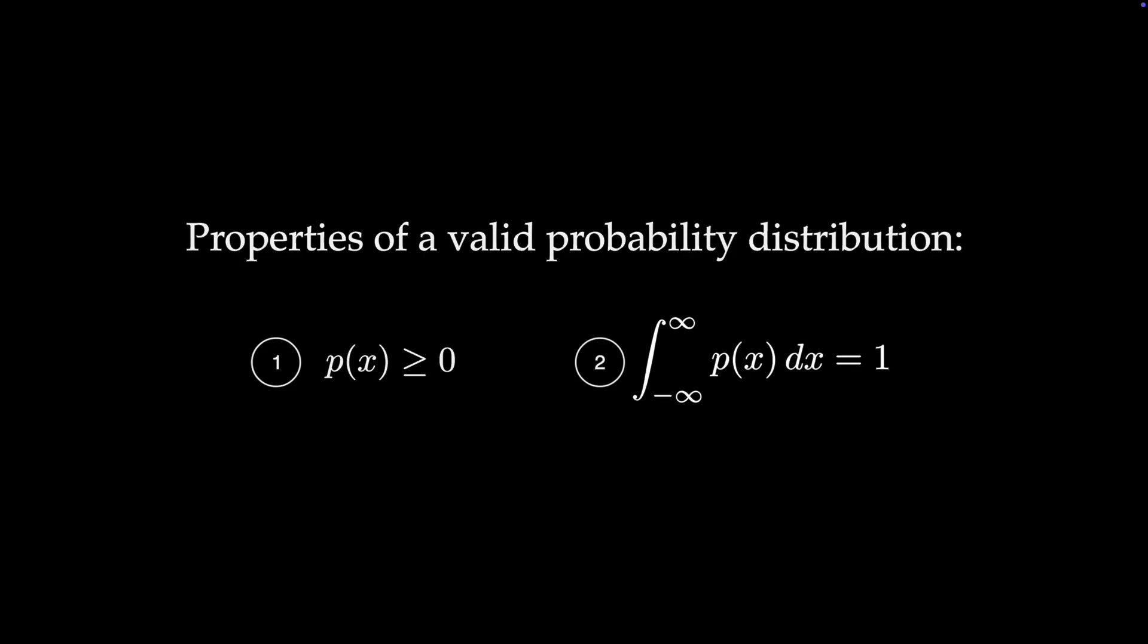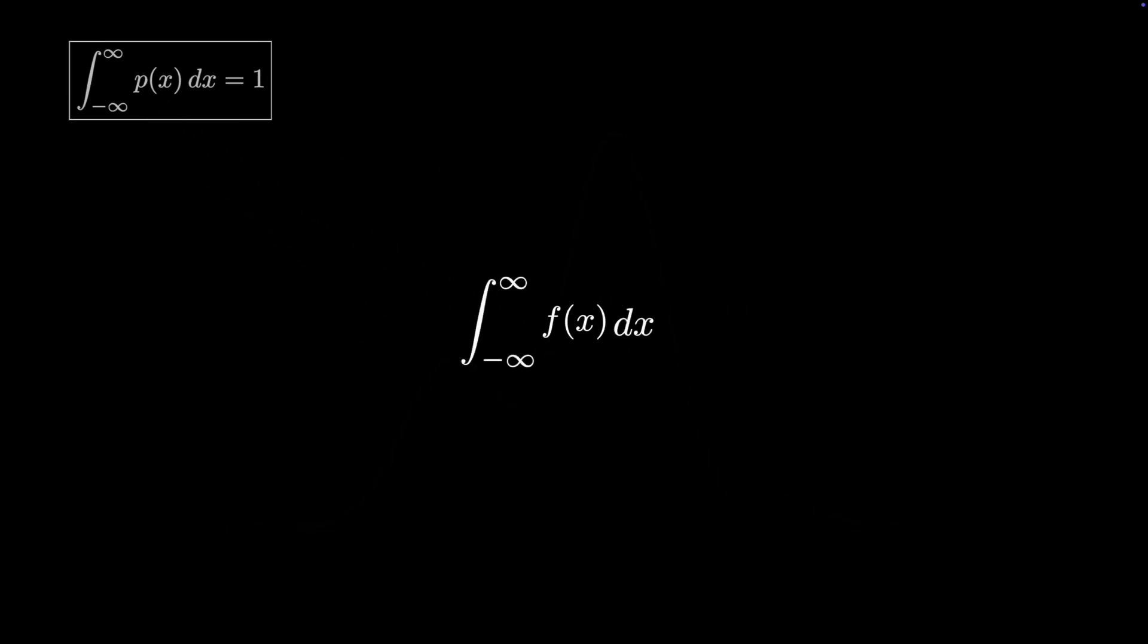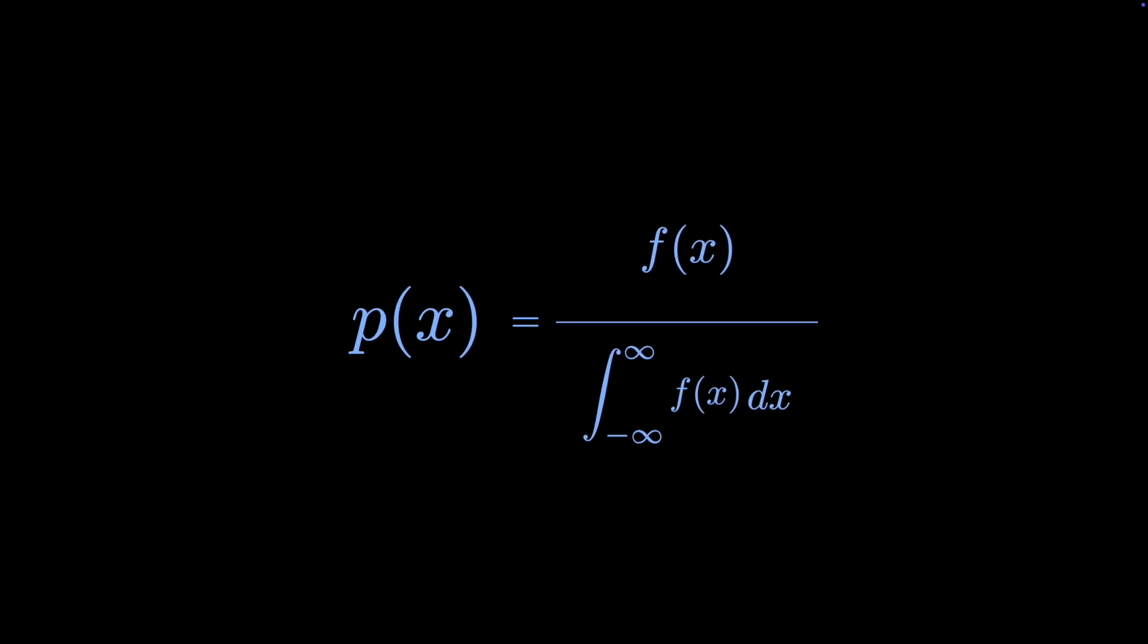Let's focus on the second property and consider the function we've been using as an example so far. To determine a valid probability density function from this function, we must ensure that it integrates to one. With some mathematical manipulation, we can see that to make it a valid probability density function, we must divide by its integral over all real numbers. In fact, probability density functions are often written this way, with the un-normalized density function on top and the normalizing constant on the bottom.